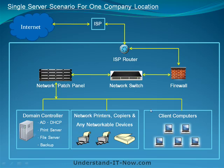The main controllers and printers all run into the patch panel. The patch panel has wires in the back connected from the bottom to the top, which connect into the network switch. From there it goes into the firewall and back out to the ISP router to the main ISP office and off into the internet. That is the single server scenario.